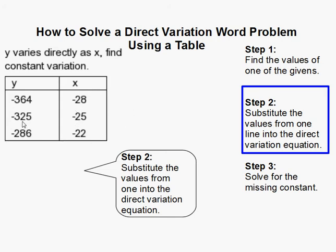Since I'm using the y negative 325, I have to use negative 25 for x. I can't switch. So I have my two values that I've chosen to use, and I'm going to substitute them into the direct variation equation.